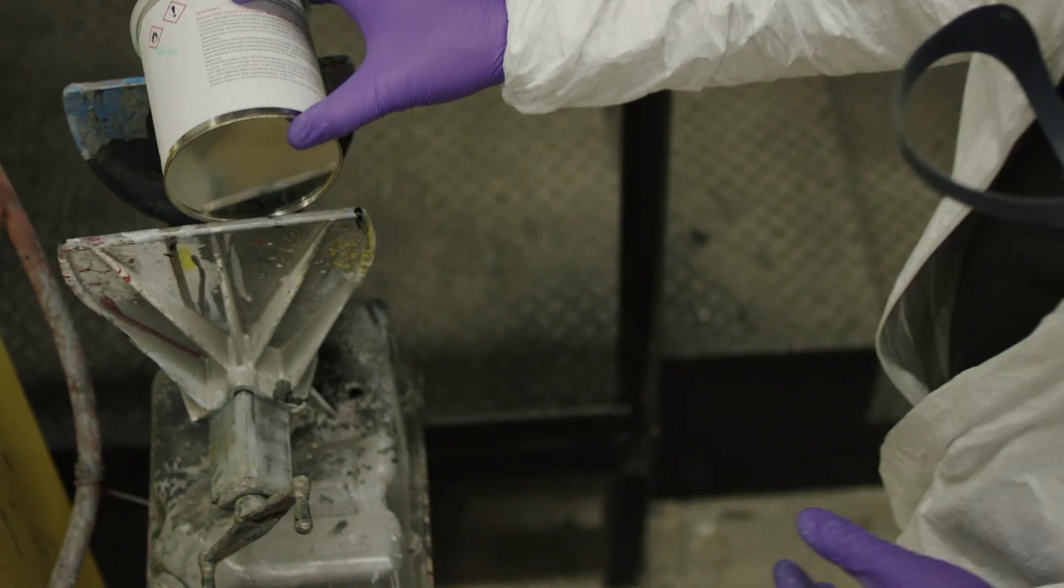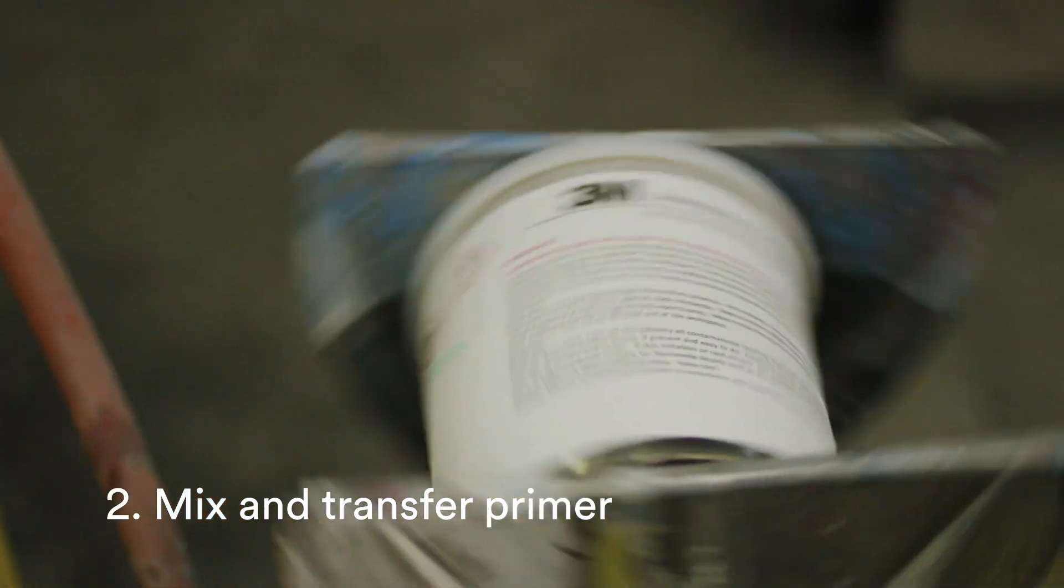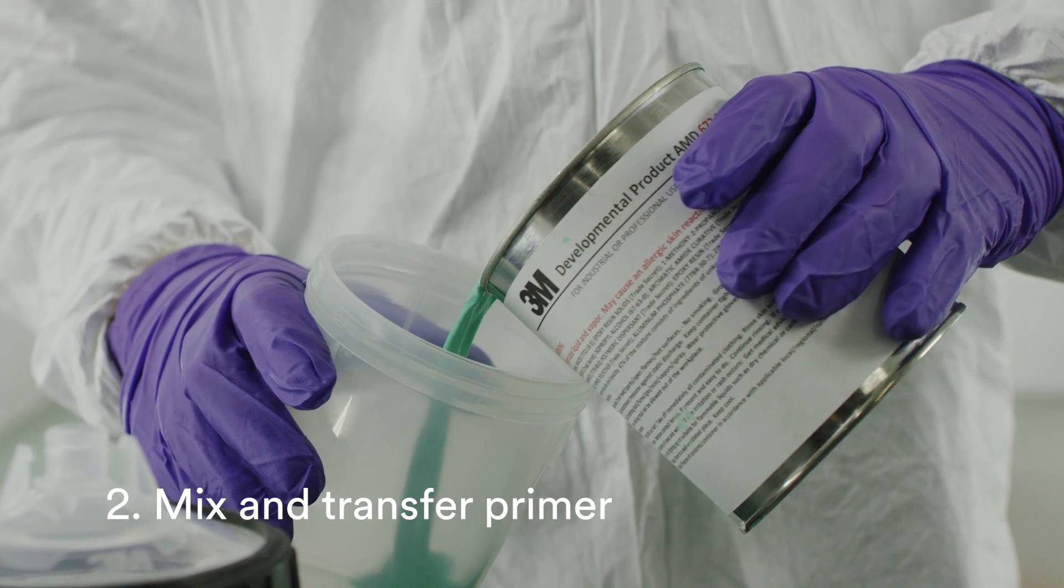Next, use a roller mixer, mechanical stirrer, or paint shaker to mix the EW5005, then transfer it to a conventional spraying system.